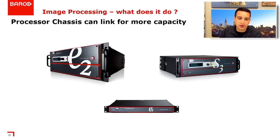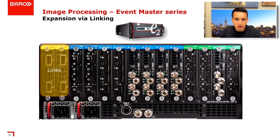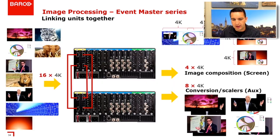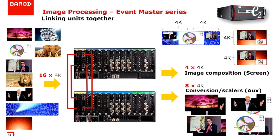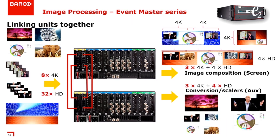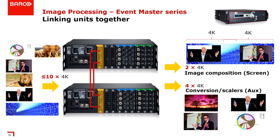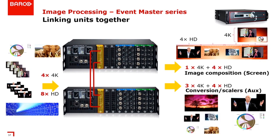Let's quickly cover linking, to show how well the family of processors works together. E2 and S3 can link using their expansion ports — when linked together, you increase input capacity, output capacity, and canvas space. With linked S3s, for example, you can have up to 10 4K in or 4 4K out with aux scalers, or 2x4 image compositions with more layers. You can even link processors to other processors, like an E2 linked to two S3s for increased capacity.